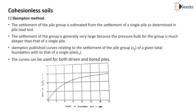This is the curve given by Skempton. The x-axis gives the width of the foundation and the y-axis indicates the ratio SG/S0. So if we know the width of the foundation, we can get the ratio of SG upon S0. After putting the value of SG in this ratio, we will get the value of S0 from this chart.